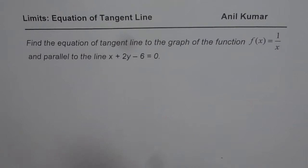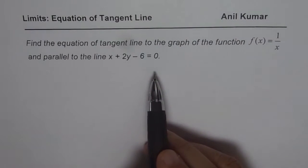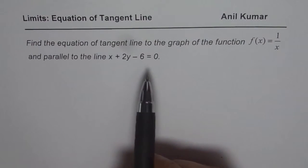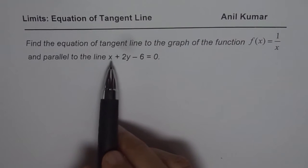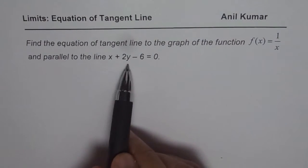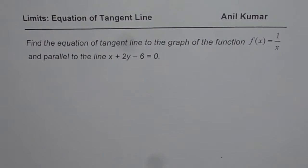This question is very different from most examples you have done so far, since we have not been given any point on the function. You need to find a point on the graph of the function where the tangent will have the exact same slope as that of the given line — then it will be parallel. That is the concept.